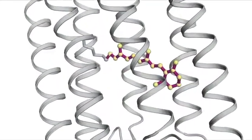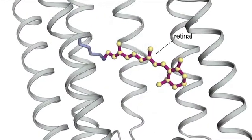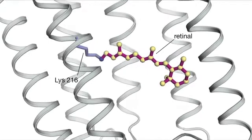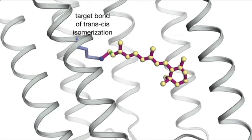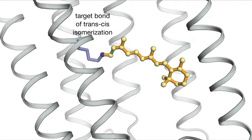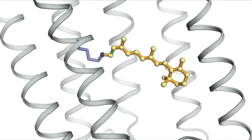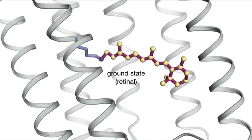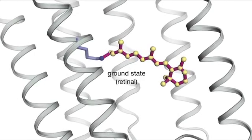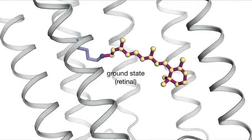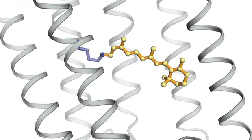Retinal is a long unsaturated hydrocarbon chain that is covalently attached to a lysine side chain of the protein. When retinal absorbs a photon of light, one of its double bonds isomerizes from a trans to a cis configuration, thus changing the shape of the molecule. The change in retinal shape causes conformational rearrangements in the surrounding protein. The light-induced isomerization of retinal is the key event in proton pumping.